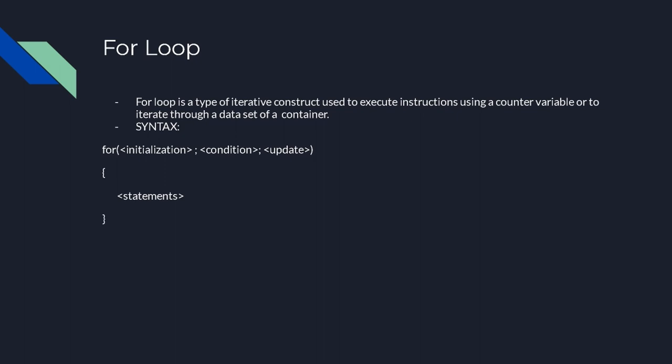Initialization is the statement executed as soon as you start the for loop — generally you initialize a counter variable. Condition is the same as in a while loop: as long as this condition is true, the loop keeps running. Update is what you want to do after each iteration. So it goes: initialization, condition, statements, update, condition, statements, update — and so on until the condition is false.